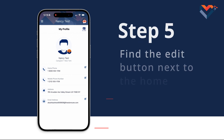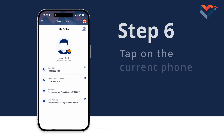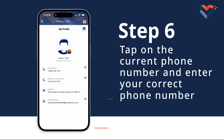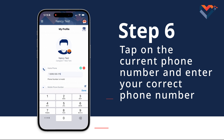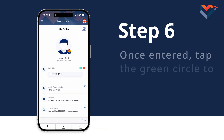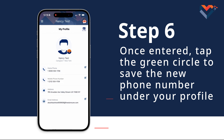Step 5: For this example, I will update my home phone number. I'll find the edit button next to the home phone number and tap it. Step 6: Tap on the current phone number and enter your correct phone number. Once entered, tap the green circle to save the new phone number under your profile.